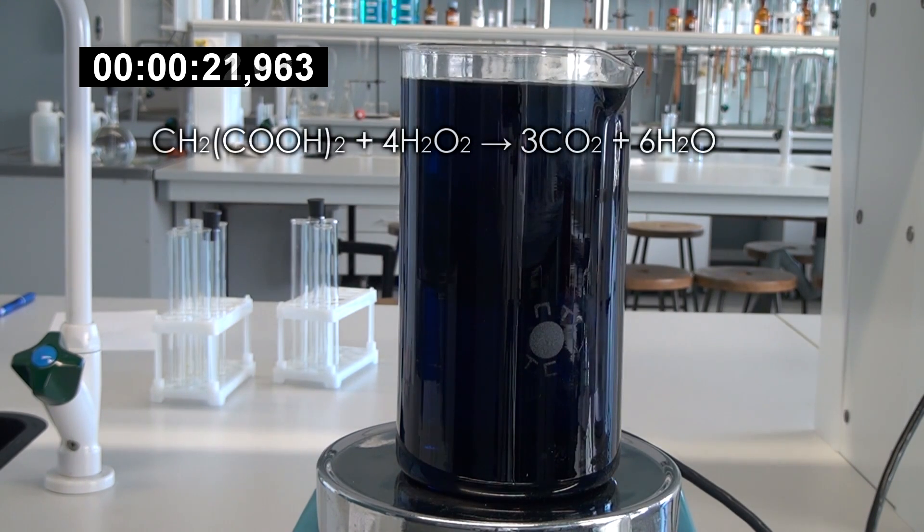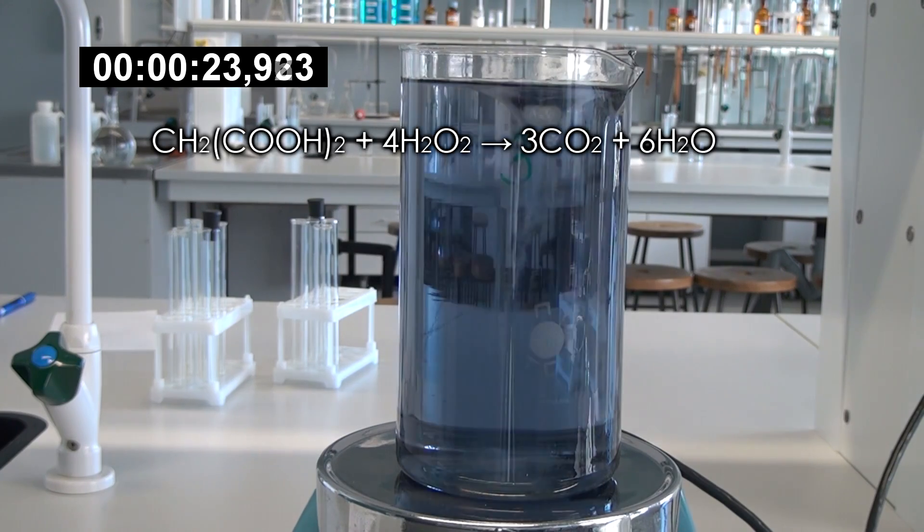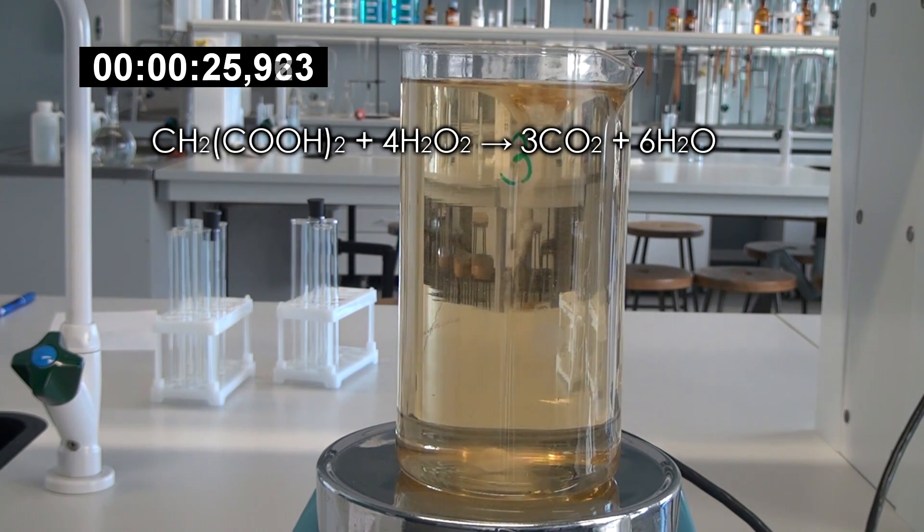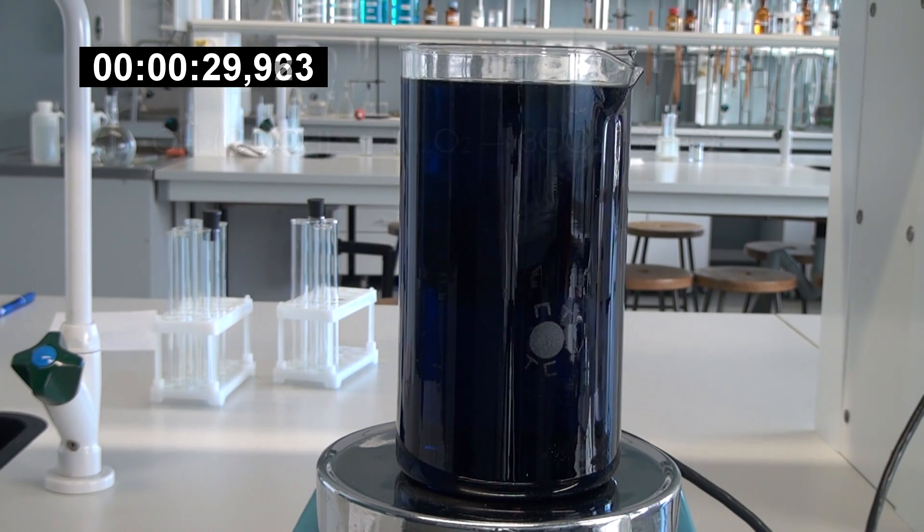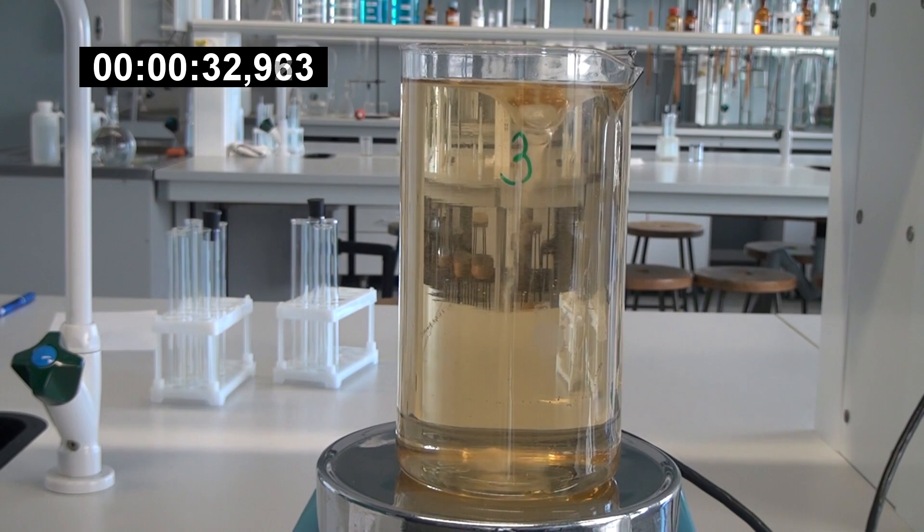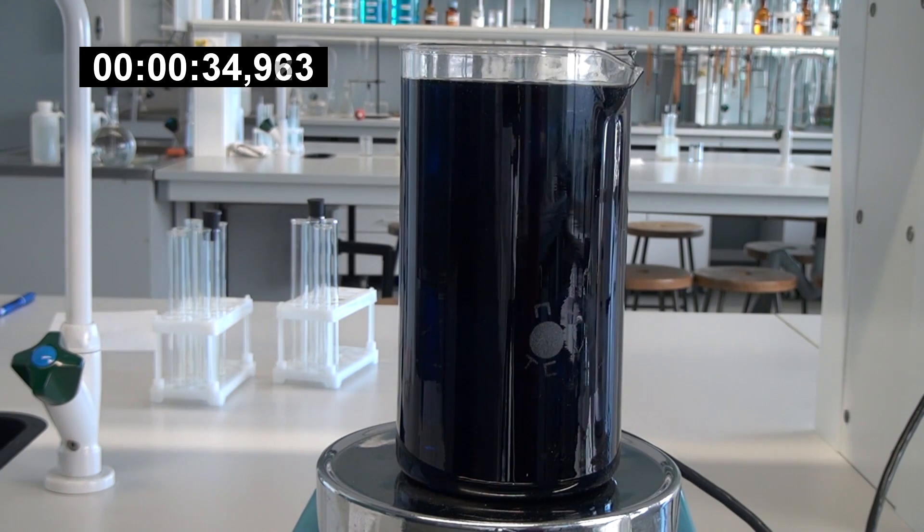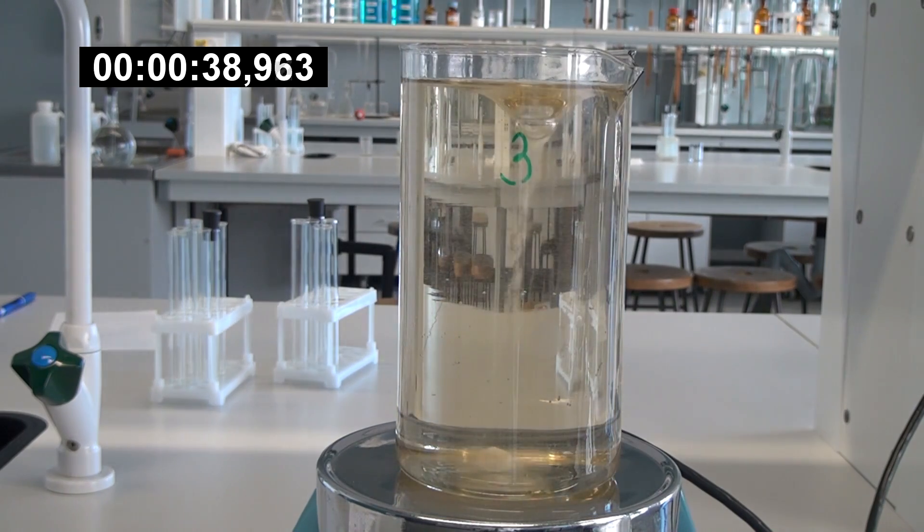The essence of this reaction is the oxidation of malonic acid with hydrogen peroxide, which produces carbon dioxide and water. The reaction has a complex scheme. Yellow color appears due to the formation of free iodine; blue color is from the reaction of starch with free iodine.